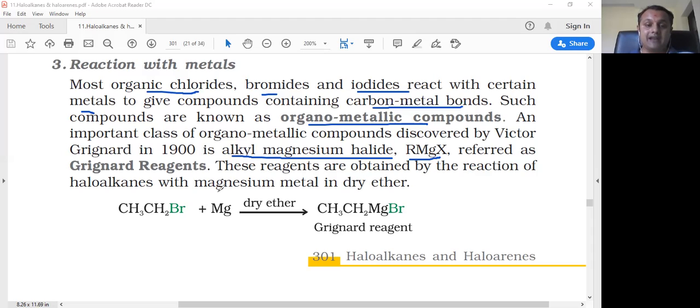Alkyl halide reacts with magnesium in the presence of dry ether. For example, bromo ethane reacts with magnesium in dry ether to give the Grignard reagent ethyl magnesium bromide.